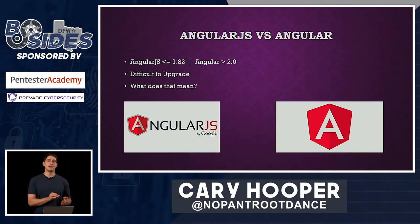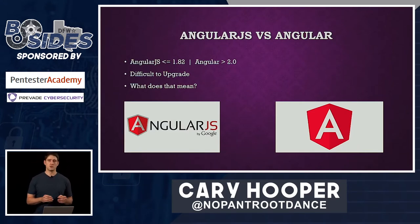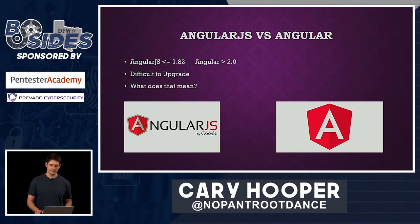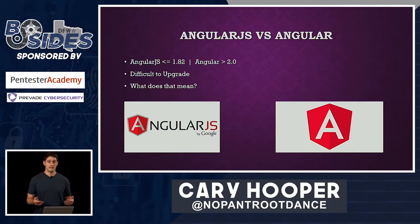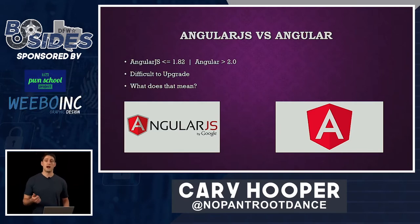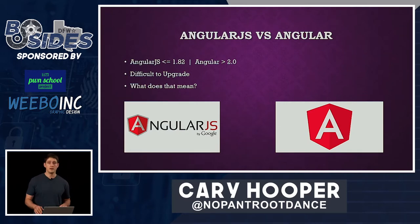AngularJS is not to be confused with Angular. When I talk about these vulnerabilities, all of them are specifically in AngularJS — that's everything below version 2.0. Angular is everything above 2.0, and there's a big difference between the two. It's not easy to upgrade; it's actually a complete revamp of the framework. That contributes to why this vulnerability is still present in a lot of web apps today. Upgrading from AngularJS is like upgrading from jQuery or from PHP 5 to PHP 7 — it can be costly and everything breaks.